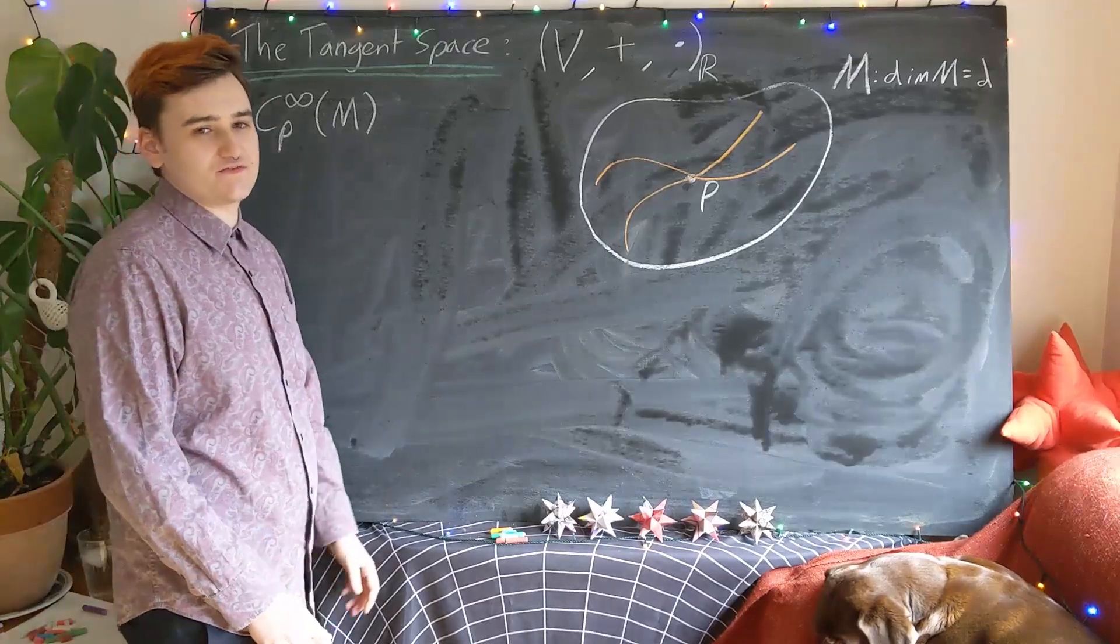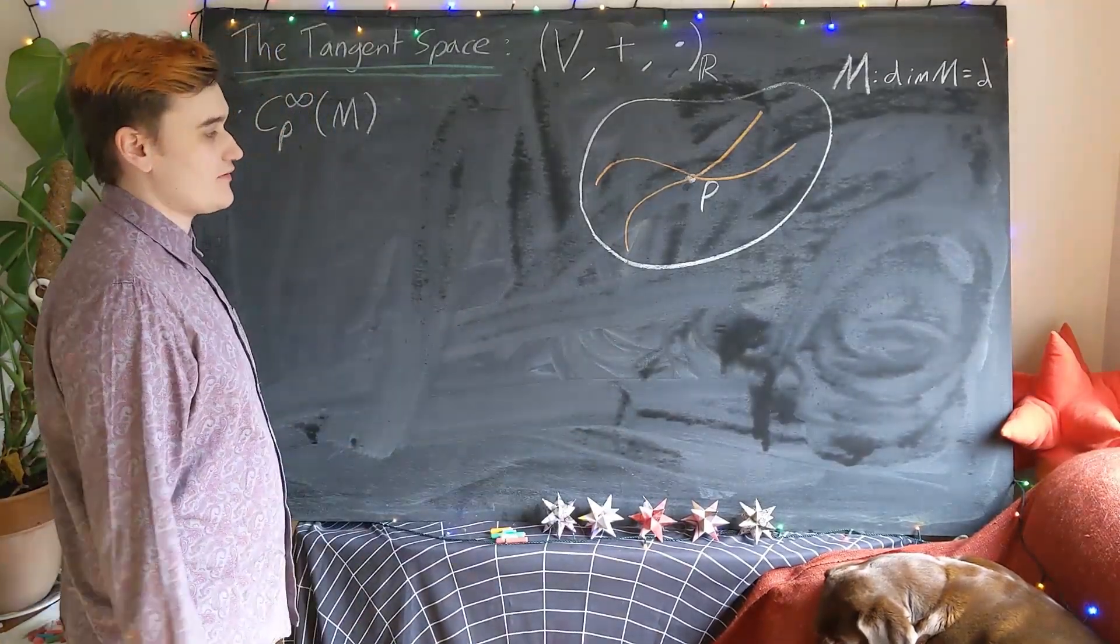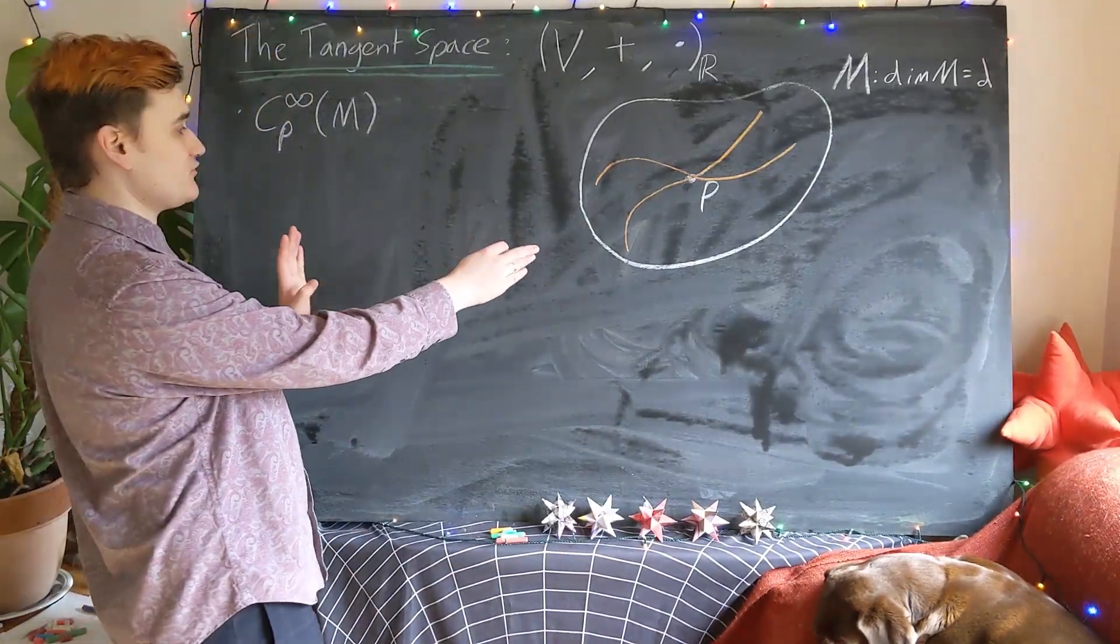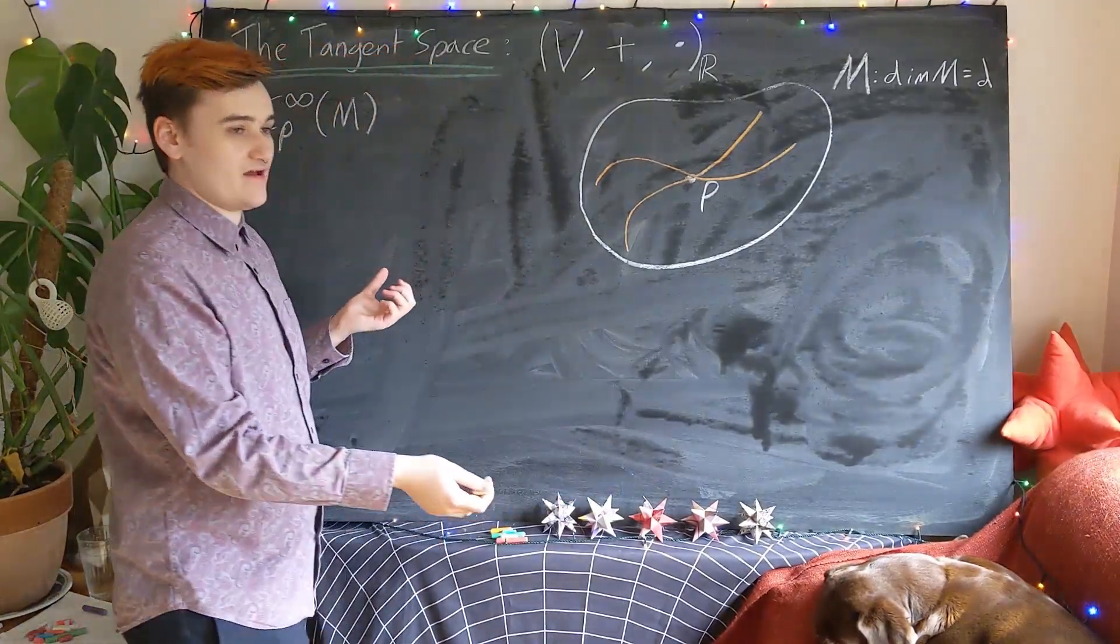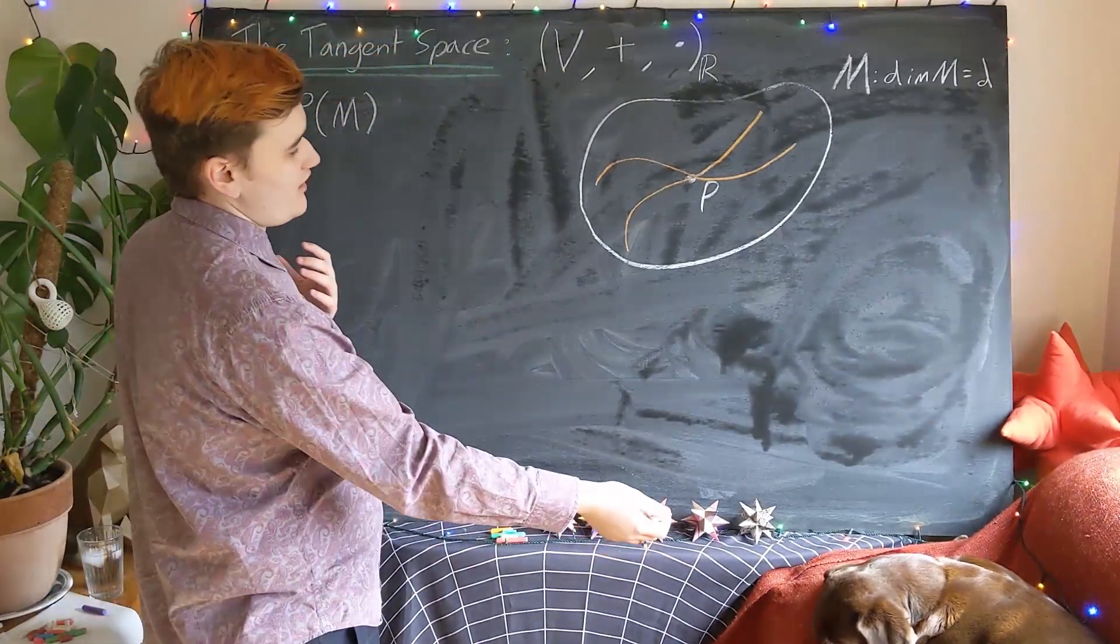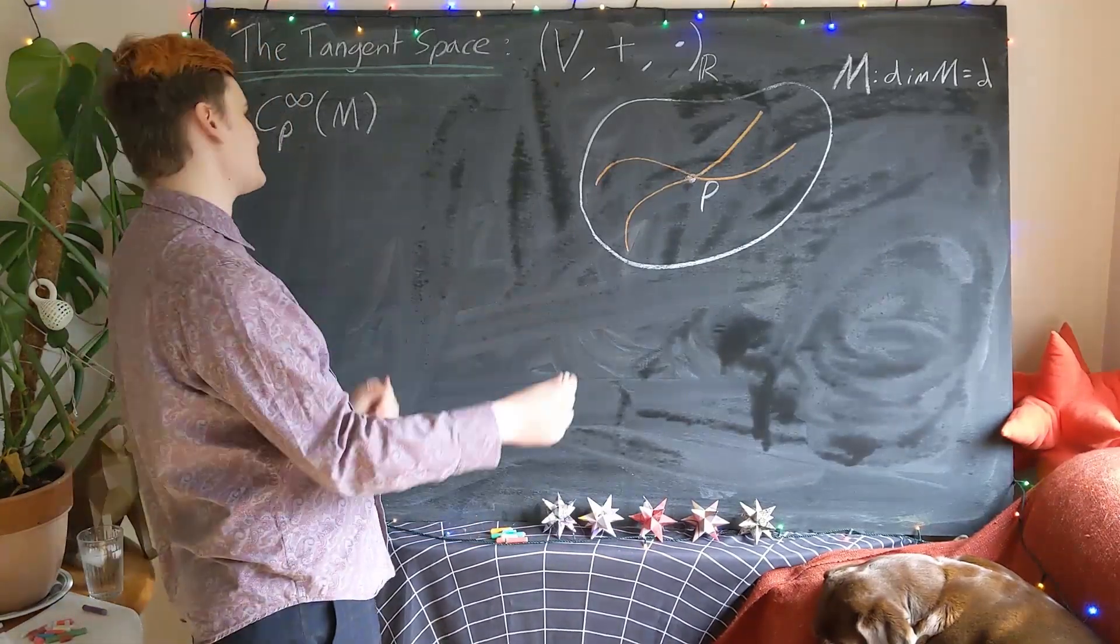Okay, so this is all just setting up. We have our now set of all smooth curves, and now we want to consider how we would form a vector space out of these smooth curves.